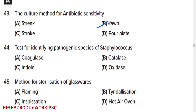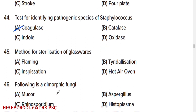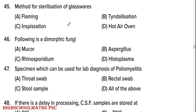The culture method for antibiotic sensitivity is option B: the dilution test. Test for identifying pathogenic species of Staphylococcus is option A: coagulase test. Method for sterilization of glassware is option B: hot air oven.